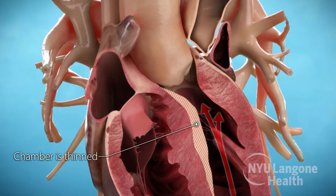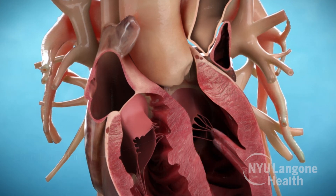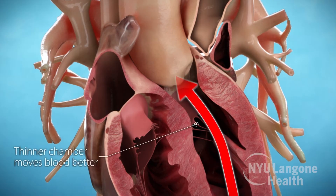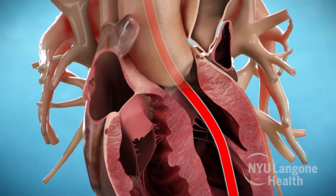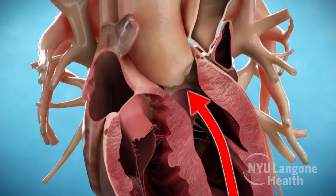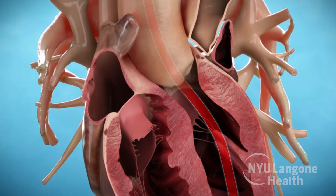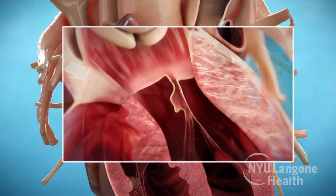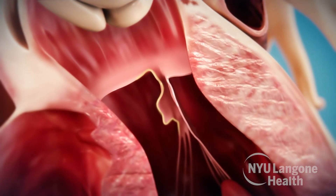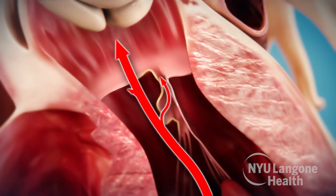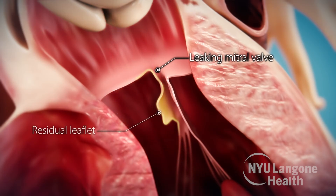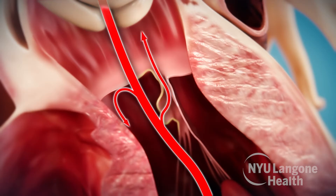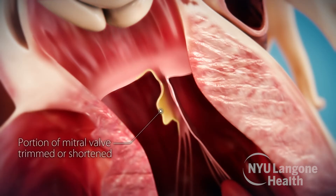Using special surgical tools, they remove the extra tissue that blocks blood flow. Once septal myectomy is complete, the obstruction created by the thickened wall is removed, and the thinner chamber wall works better at moving blood through the heart. Some people with HCM also benefit from residual leaflet excision, also called RELAX, to repair the mitral valve. HCM can cause the mitral valve to leak and develop extra tissue, called a residual leaflet, which blocks blood as it tries to flow out of the left ventricle.